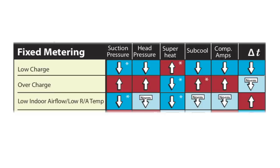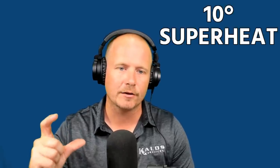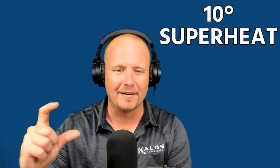Now let's look at the difference between system types. On a fixed metering device, when you have low airflow you're going to have low superheat and low suction pressure. On a TXV system, you are not necessarily going to have low superheat. It does tend to creep down a little bit — it's really more normal to low. So if you're used to seeing 10 degrees superheat on a system, with low airflow it may be down to around 8. The TXV's job is to maintain superheat, so it won't go to zero.